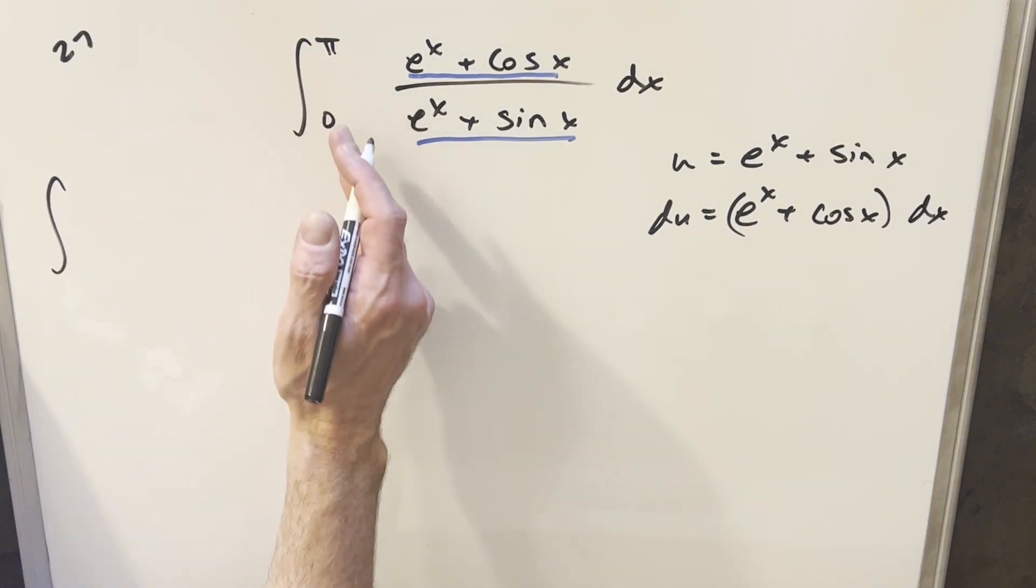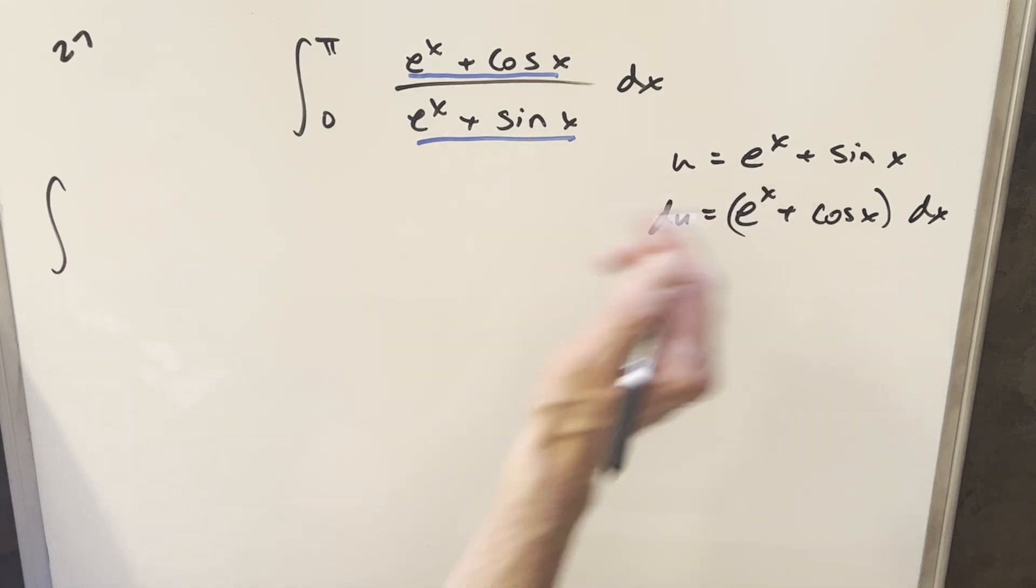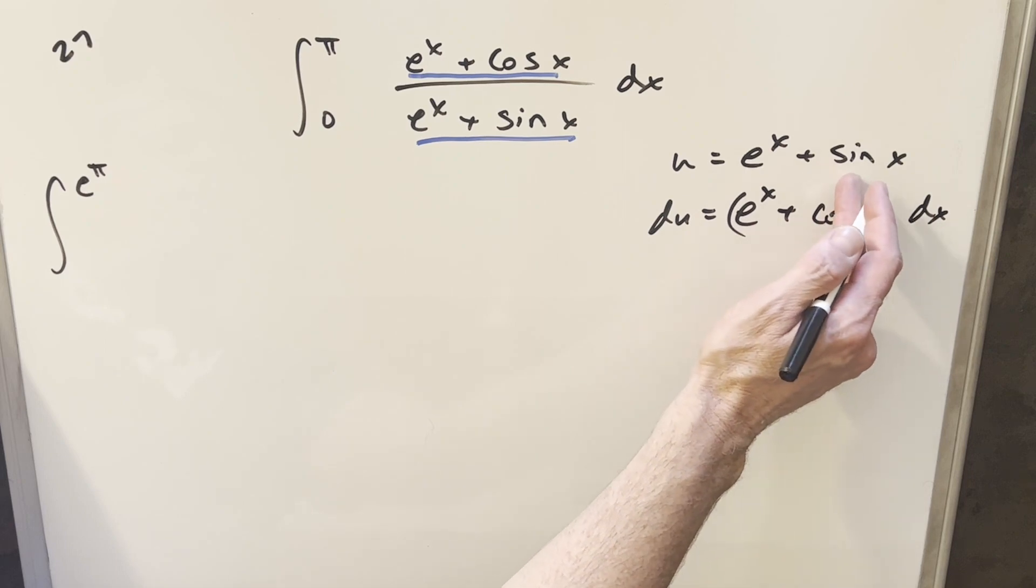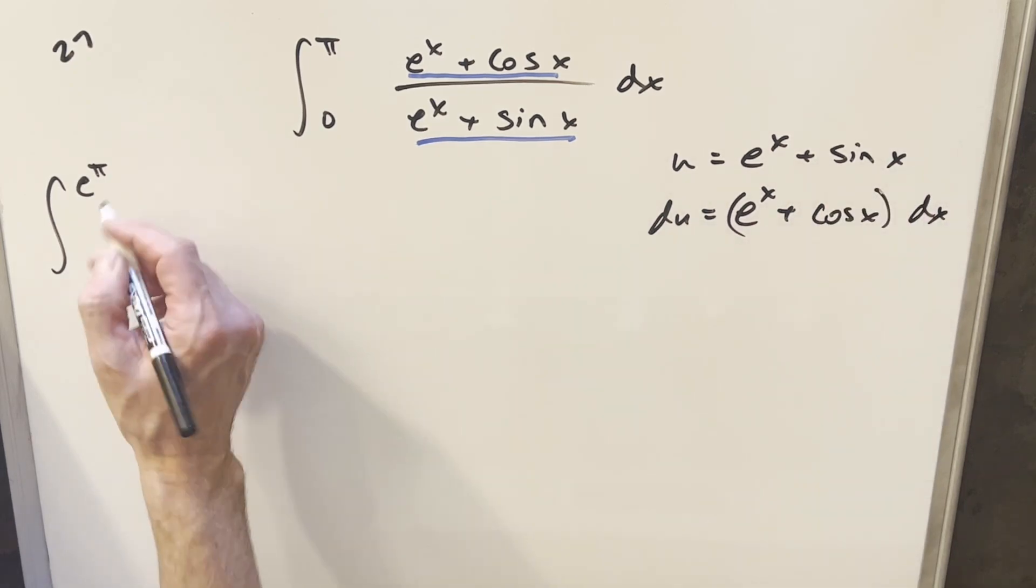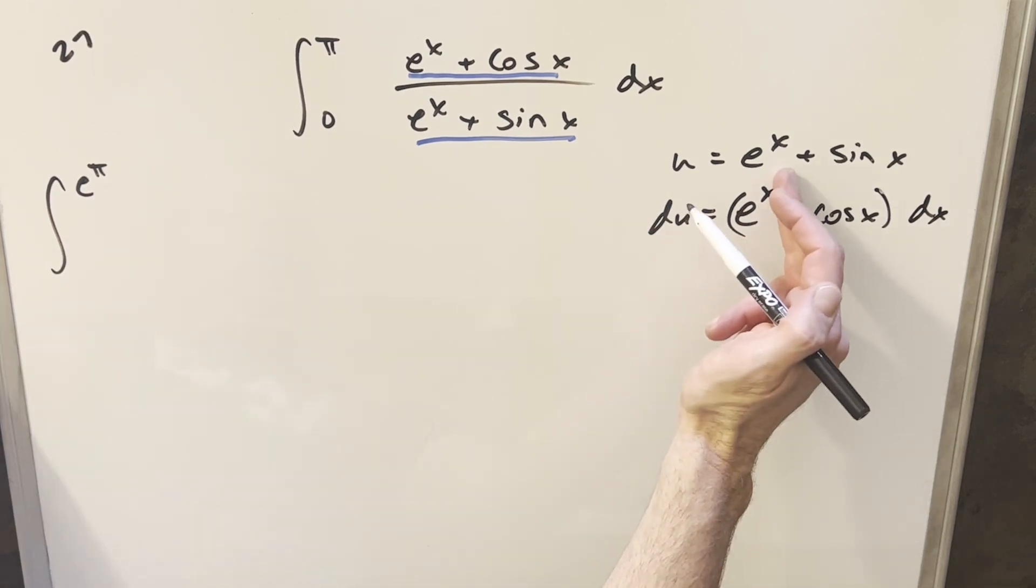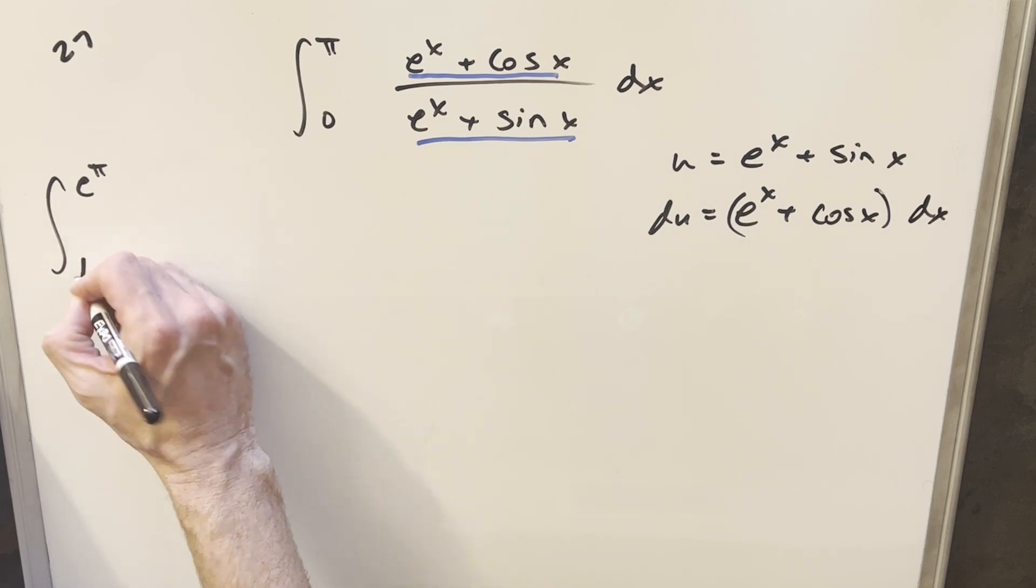Then we'll make the substitution. Updating the bounds—this is probably the trickiest part. Plugging in π, we have e^π, and sin(π) = 0, so our upper bound is e^π. Plugging in zero, e^0 = 1 and sin(0) = 0, so the lower bound is 1.